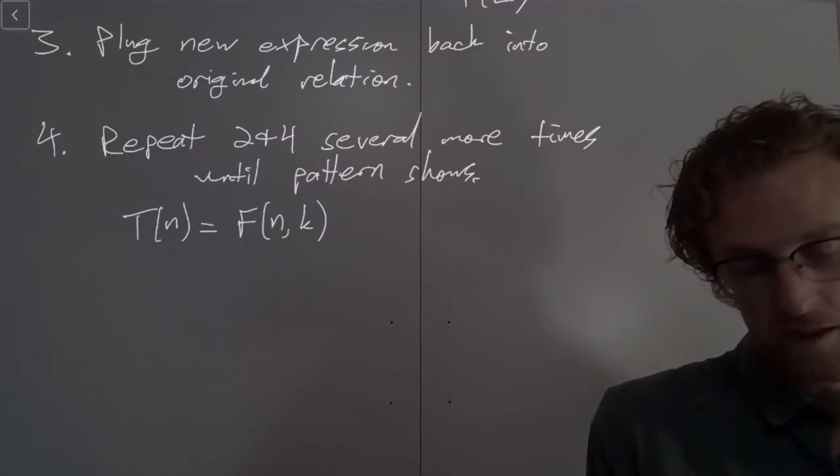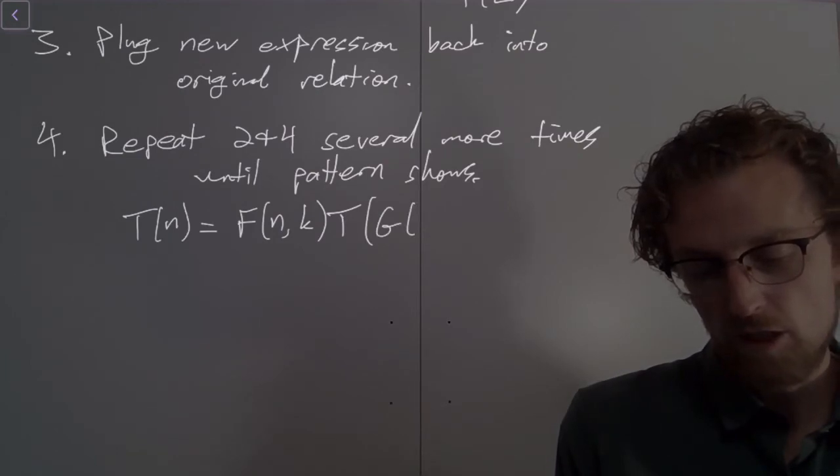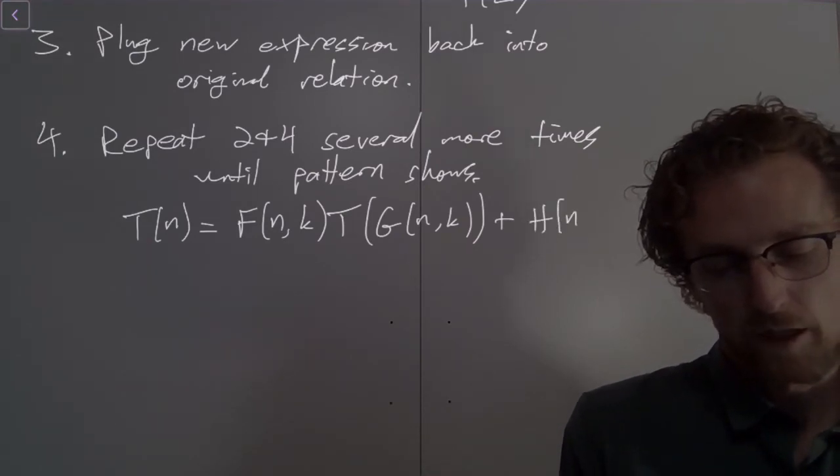There's going to be a bunch of abstract functions of n and k, some function of n and k times T of some other function of n and k. Okay, so I'll call that function g(n,k) plus some other function of n and k. Okay, so this is what we're looking for.